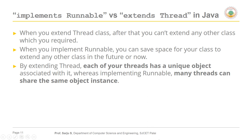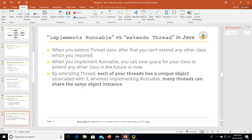The second difference: by extending the Thread class, each thread has a unique object associated with it, so every new thread object takes a different space in memory. Whereas implementing Runnable means many threads can share the same object instance — when you create the object using the Runnable interface, only one object instance is created. Let's look at an example to see this difference clearly.